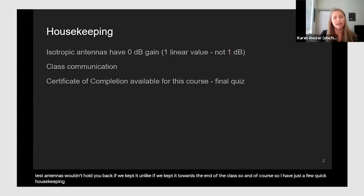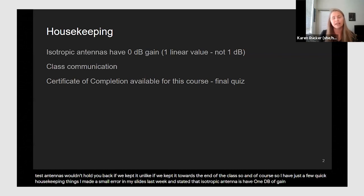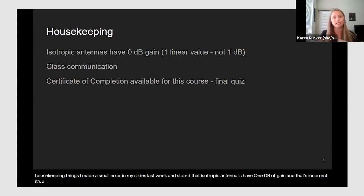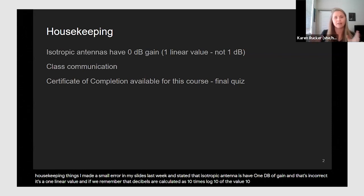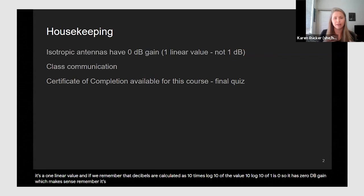I have a few quick housekeeping items. I made a small error in my slides last week and stated that isotropic antennas have one dB of gain — that's incorrect. It's a linear value of one, and if we remember that decibels are calculated as 10 times log base 10 of the value, 10 log10 of one is zero, so it has zero dB gain. It's a mathematical construct you can't really build — it's just a reference, so it has no actual gain itself.